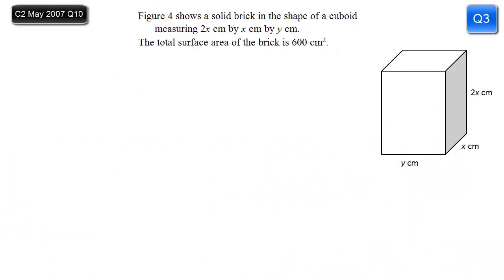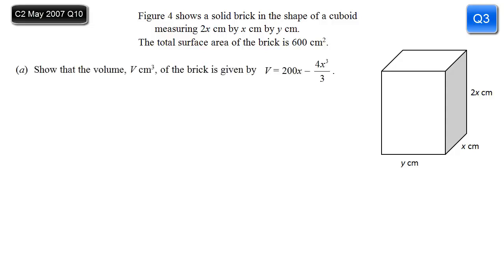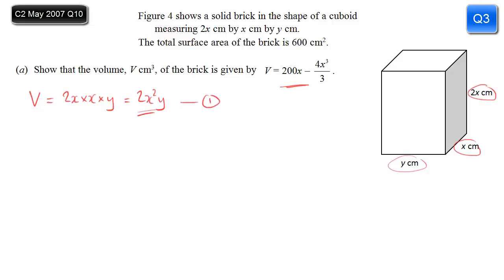In this question, we're given a diagram of a cuboid with dimensions 2x, x, and y, and we're told the surface area. The first task is to derive an expression for the volume. The volume of a cuboid is simply the three dimensions multiplied together: 2x times x times y gives 2x squared y. We'll label this equation 1 and come back to it.